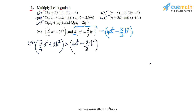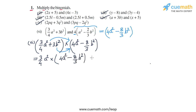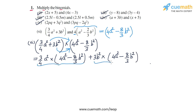We expand using the distributive law: take the product of ¾A squared with the second bracket and then 3B squared with the second bracket. This gives ¾A squared into 4A squared minus 8/3 B squared, and then 3B squared into 4A squared minus 8/3 B squared. Expanding term by term: ¾A squared into 4A squared, and minus ¾A squared into 8/3 B squared.